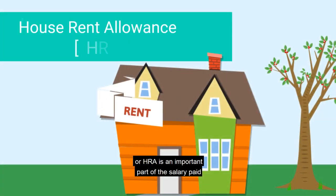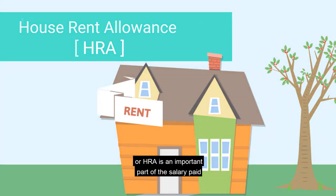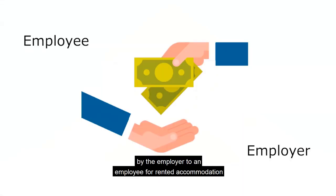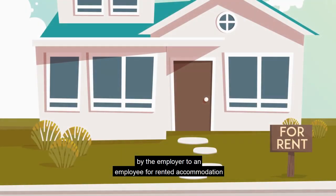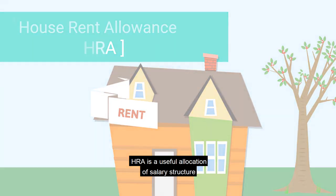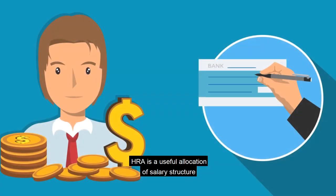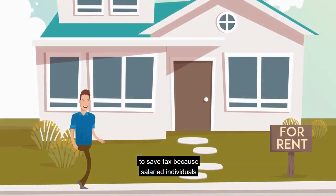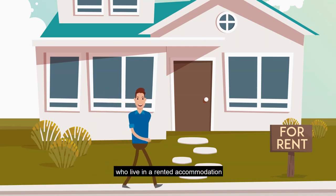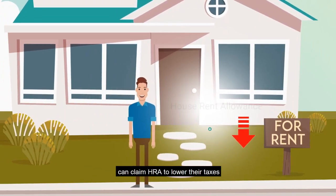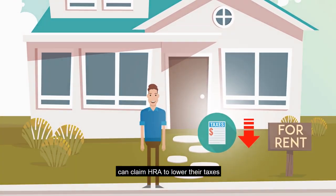House Rent Allowance, or HRA, is an important part of the salary paid by the employer to an employee for rented accommodation. HRA is a useful allocation of salary structure to save tax, because salaried individuals who live in rented accommodation can claim HRA to lower their taxes.